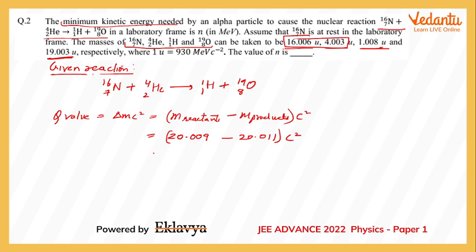This basically means that the mass defect is negative: minus 0.002 AMU times C squared. This turns out to be minus 0.002 times 930 MEV, which equals minus 1.86 MEV.